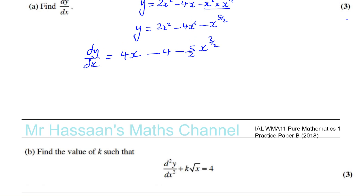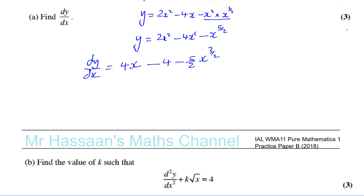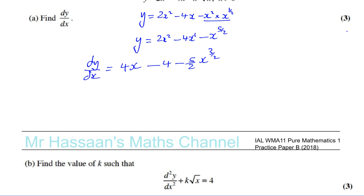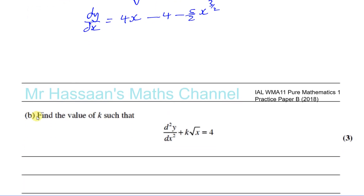So what does d²y/dx² mean? It means the differential of dy/dx — you're differentiating dy/dx with respect to x again. That's why it comes out as d squared y over dx squared.